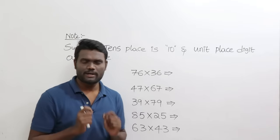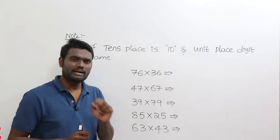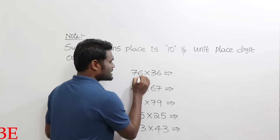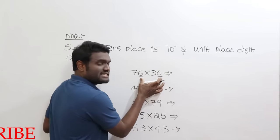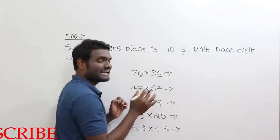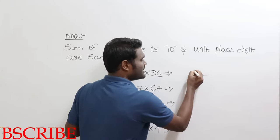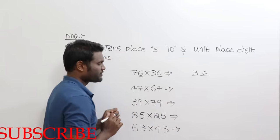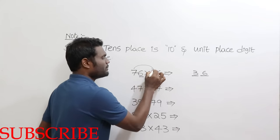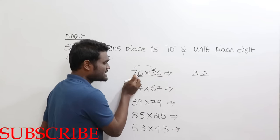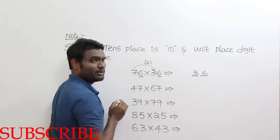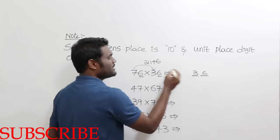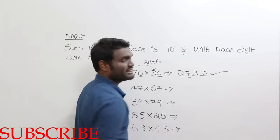Here is another interesting technique — these numbers can also be multiplied in just 2 seconds. Observe carefully. The units digits are 6 and 6, so 6×6 = 36, making the last 2 digits of the answer 36. Now multiply the tens-place digits: 7×3 = 21. Then add the units digit 6: 21 + 6 = 27. The answer is 2736.